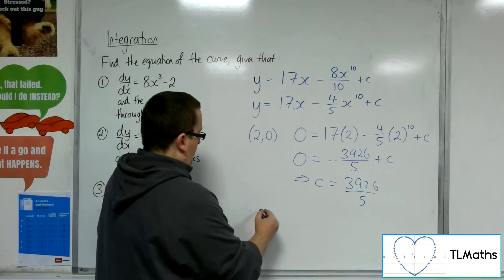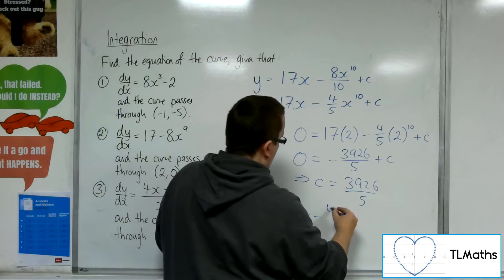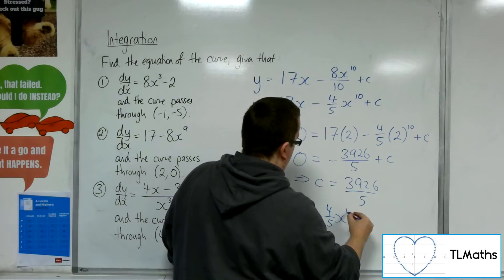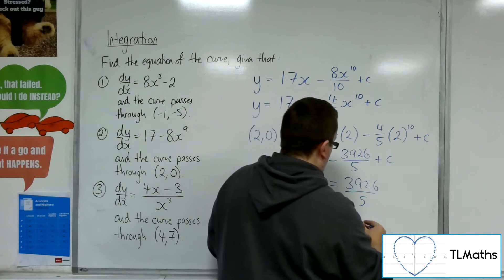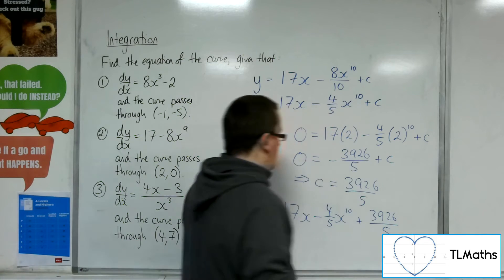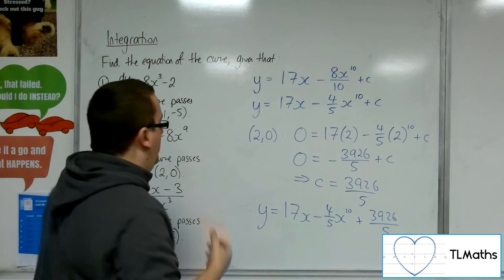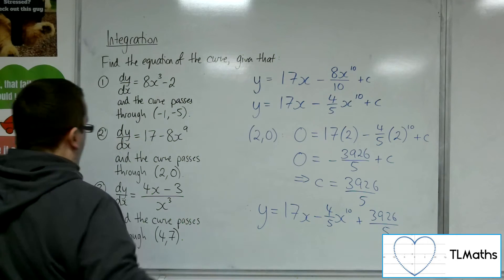So therefore, the equation of my curve is y = 17x - (4/5)x¹⁰ + 3926/5. Not a particularly nice number. Doesn't matter. That is my equation.